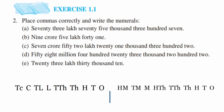Problem B: nine crore five lakh forty-one. For nine crore, it's a single digit so we write 09. Then five lakh — again single digit — so we write 05. There's no thousands value, so we put zeros in the ten-thousands and thousands places. Forty-one occupies tens and ones, so hundreds is also zero. The answer is 9,05,00,041.